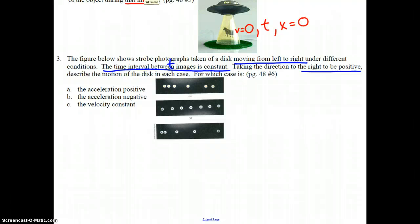For which case is, and what I'm going to do here is I'm going to color code A, B, and C different colors, and map this out on these diagrams. The acceleration positive. So we're going to mark places in which the acceleration is positive. What does that mean? Acceleration is the rate of change of velocity.